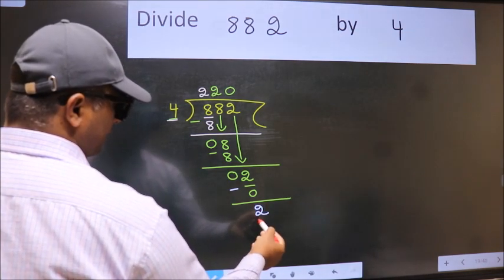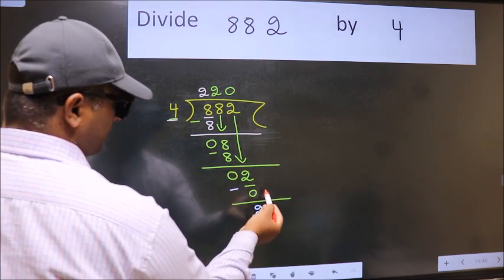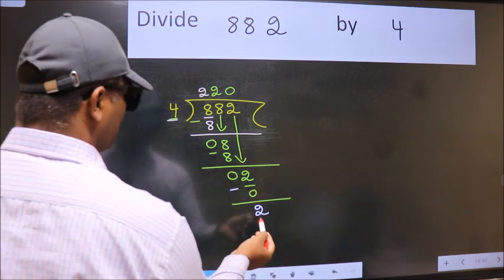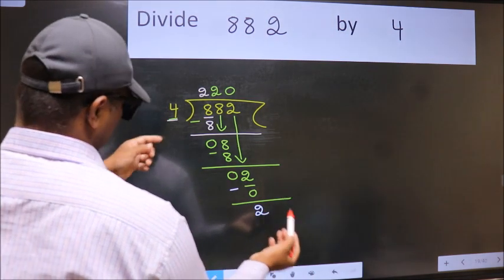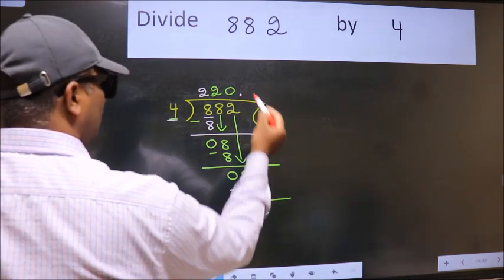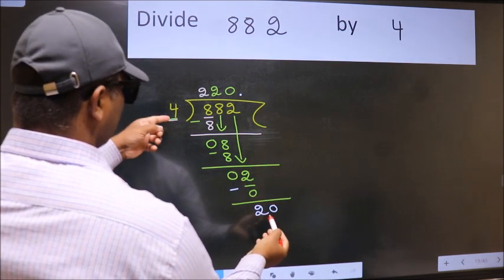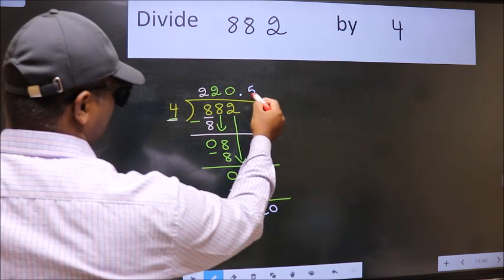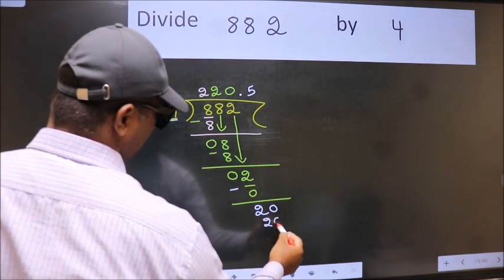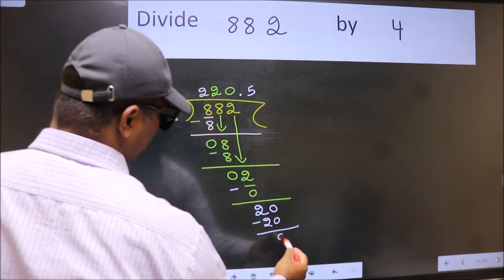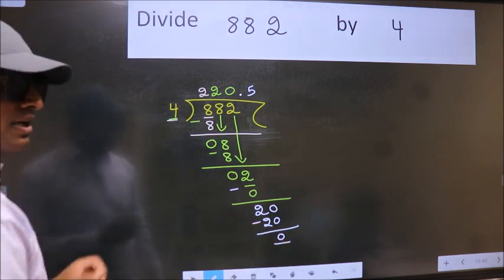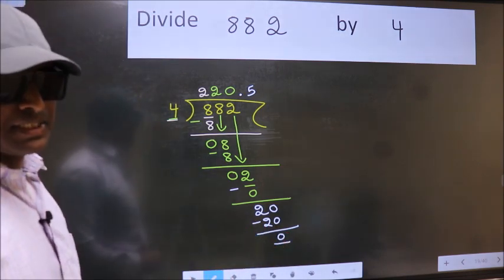Over here, we did not bring any number down. And 2 smaller than 4. So now we can put dot and take 0. So 20. When do we get 20 in 4 table? 4 fives, 20. Now we subtract. We get 0. Did you understand where does the mistake happens? You should not do that mistake.